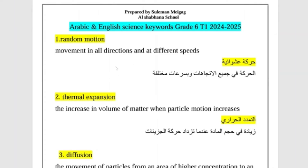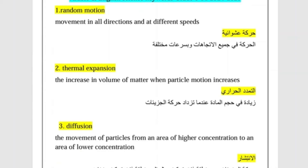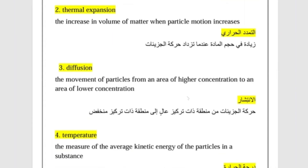I will send an Arabic-English translation of all the key words for Term 1 to the WhatsApp group. This includes: random motion (how particles move), kinetic energy, thermal expansion (how things get bigger when hot), and diffusion — like when I sprayed water in the room and it spread from the front to the back, moving from high concentration to low concentration. Gases and liquids diffuse from high concentration to low concentration.